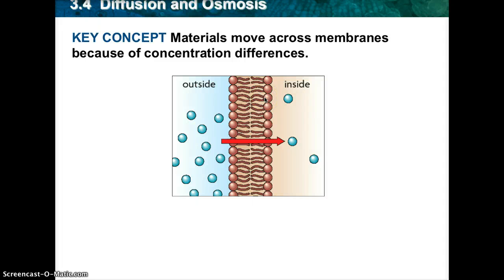We're going to look at diffusion and osmosis. These are both ways in which molecules can get from the outside of the cell to the inside of the cell, and we're going to talk about concentration gradients.